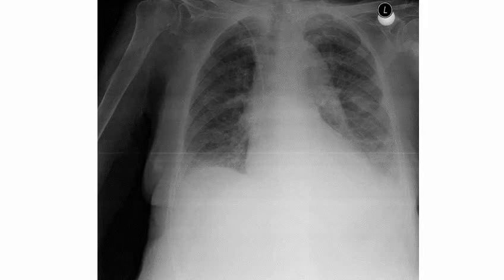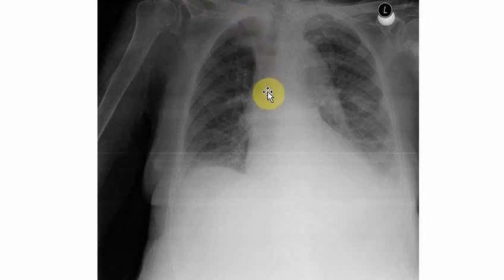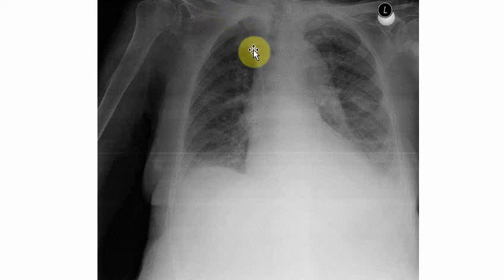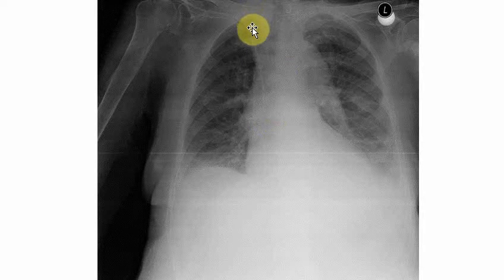This is also something interesting. Sometimes x-rays are used to check something — in this case there is a central venous catheter inserted, and the tip of the catheter should be at the base of the superior vena cava. In this case we can see that is true, and the x-ray was used to confirm that the placement was correct.